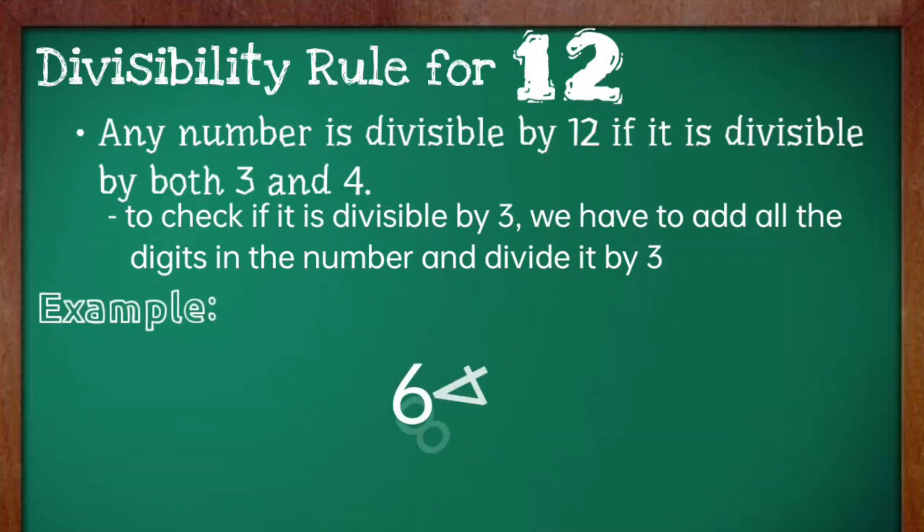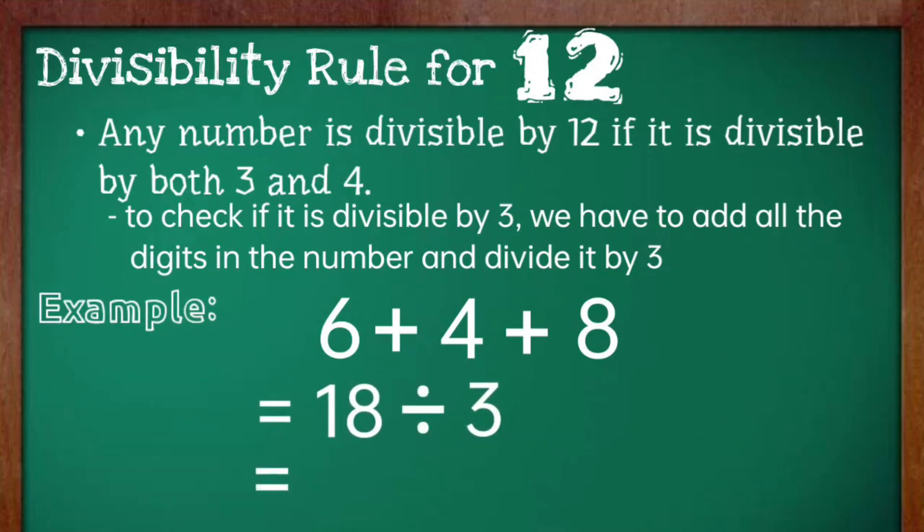For example, 648. The number 648 is divisible by 3 since 6 plus 4 plus 8 is equal to 18 divided by 3, which is equal to 6.